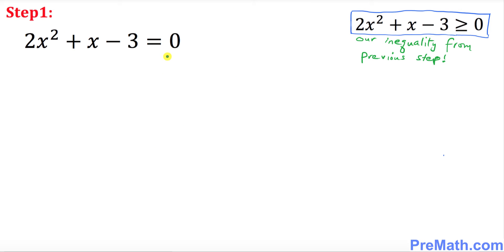From the previous step we have this inequality greater than or equal to. Now to make things simple and easy, we want to remove that inequality and put an equal sign instead. Let's pretend there is no inequality and there is an equal sign — that is going to make our job a lot easier. So now we have a quadratic equation and we want to solve for x.